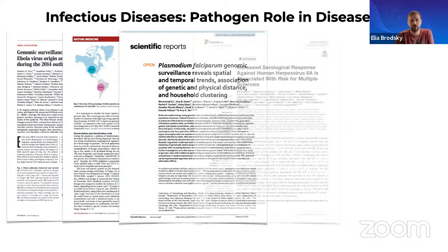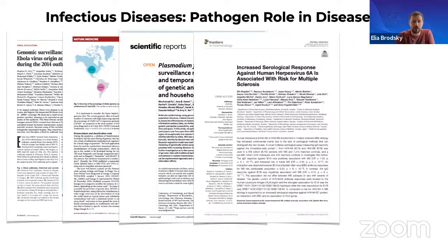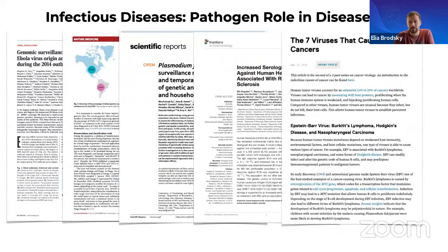An interesting recent article describes increased serological response against human herpesvirus 6A associated with risk for multiple sclerosis. This idea was proposed in the 1990s but only recently validated with statistical significance. This leads us to think about many other diseases we consider purely neurological or genetic — even cancers resulting from somatic mutations — that may in fact be caused by infectious agents. An estimated 12–20% of cancers worldwide are thought to result from tumor viruses, with seven known viruses that cause human cancers.